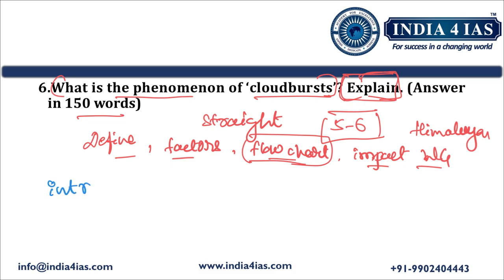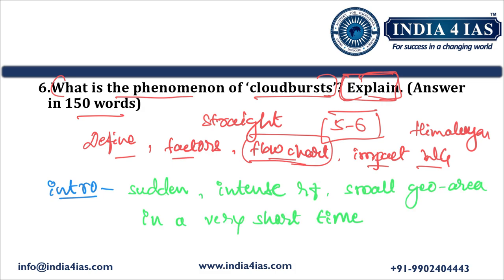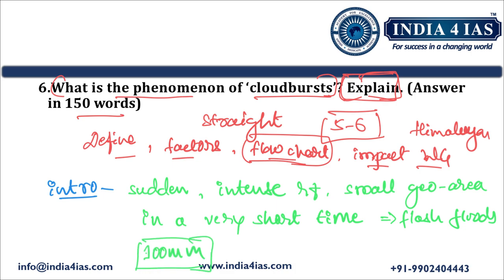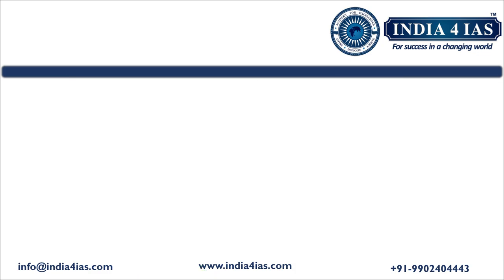Coming to the introduction, we should define cloudburst. Cloudburst is a sudden intense rainfall over a small geographical area in a very short time, typically resulting in flash floods. Technically, it is defined as a precipitation event in which more than 100 mm of rain falls within an hour over a small area, often measuring just a few square kilometers. If that happens, we call it a cloudburst.